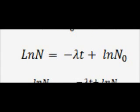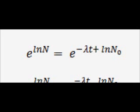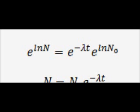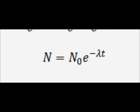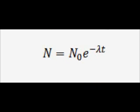Natural log of n equals minus lambda t plus natural log of n0. Since we have natural logs, we raise the whole equation to base e. So e to the natural log of n equals e to the quantity minus lambda t plus natural log of n0. Separating the right-hand side using power laws: e to the natural log of n equals e to the minus lambda t times e to the natural log of n0. Since e to the natural log of something is just that thing, we get n equals n0 times e to the minus lambda t — which is exactly what we were trying to derive.